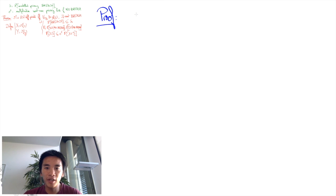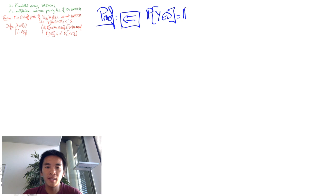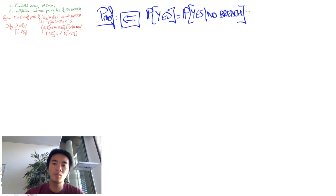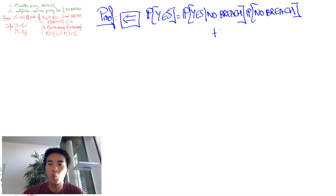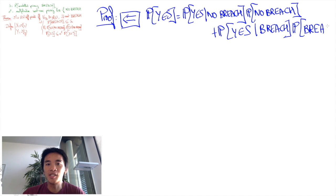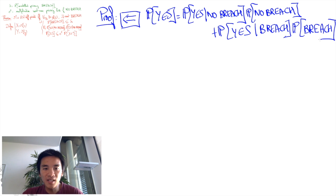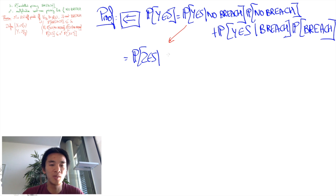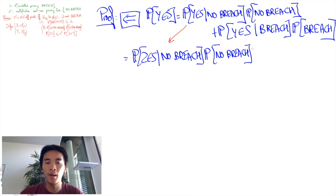First, let's prove the easier right-to-left implication. We have the probability that Y is in S, which equals the probability that Y is in S when there is no breach times the probability of no breach, plus the probability that Y is in S when there is a breach times the probability of a breach. We can rewrite this in terms of Z: when there is no breach, the probability distribution of Y conditioned on no breach is the same as the probability distribution of Z. So this corresponds to replacing Y in the first term by Z.